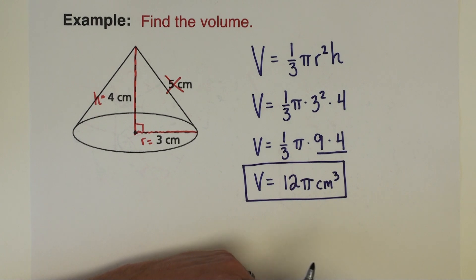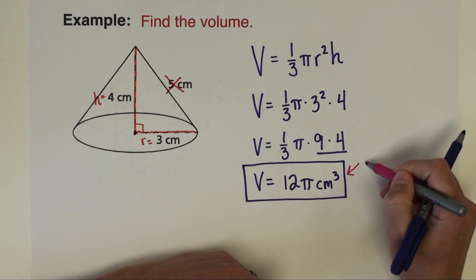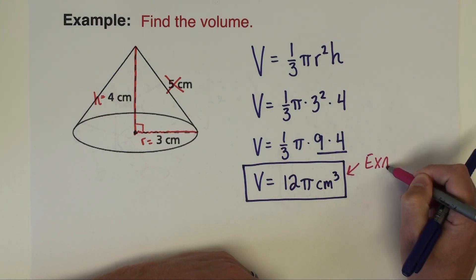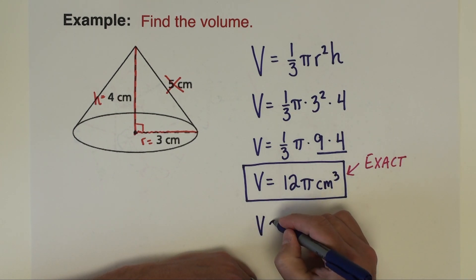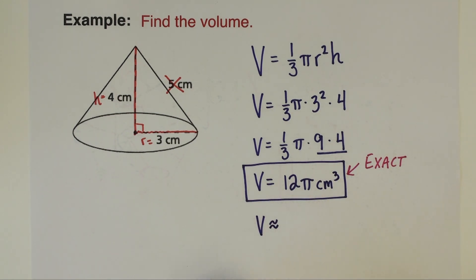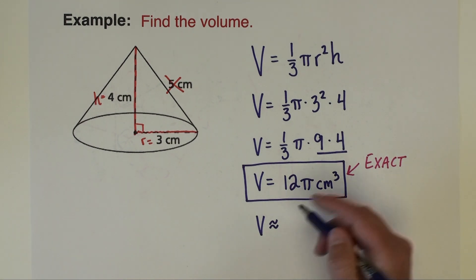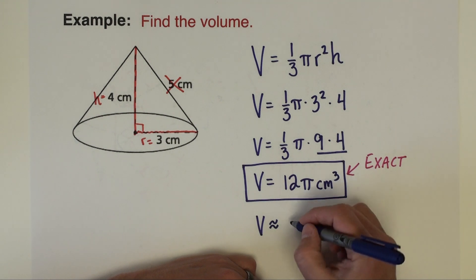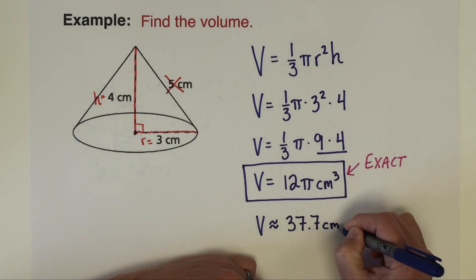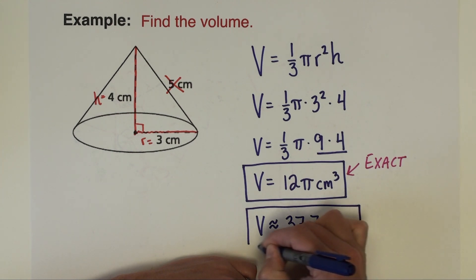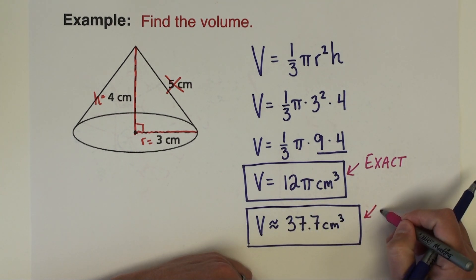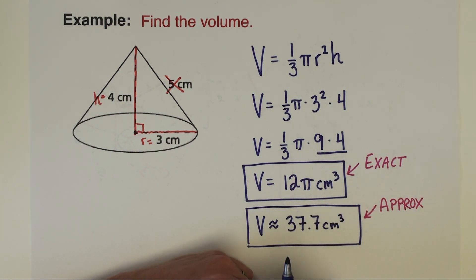We've seen this plenty of times where we leave our answer in terms of pi so that's an exact answer. If we want an approximate answer, let's just go to the calculator and type in 12 times pi and I get 37.7, still would be centimeters cubed. So there's our approximate value of the volume.